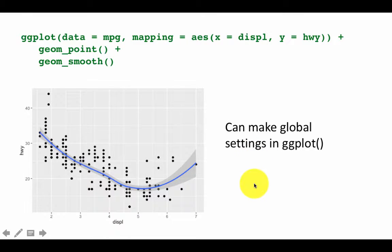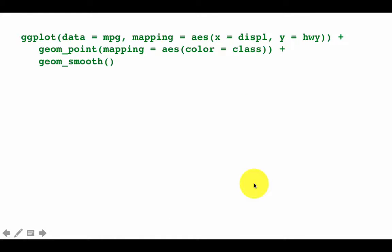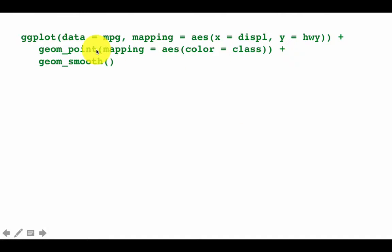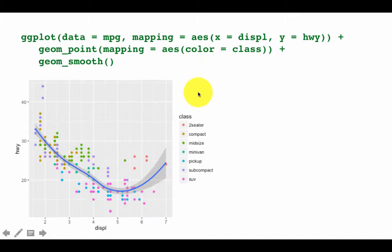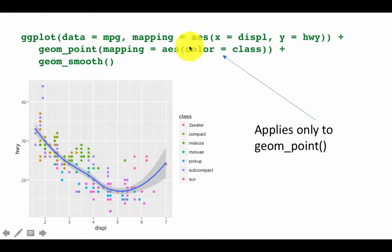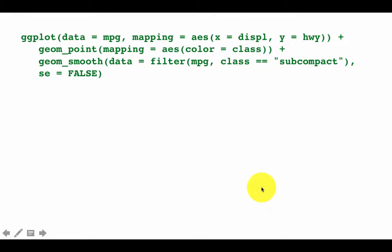So here we are specifying data, mapping, x and y aesthetics globally, but in geom_point we wanted to have color based on class, and we did that. So geom_point gets the x and y aesthetics from the global ggplot call and adds one more aesthetic — color by class. This aesthetic applies only to geom_point, whereas the x and y aesthetics apply to both geom_point and geom_smooth. It's very powerful and logical how it works.